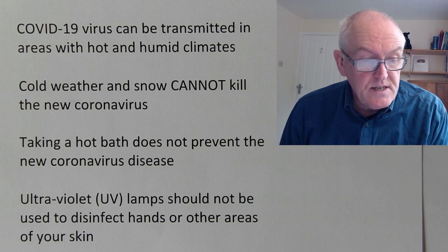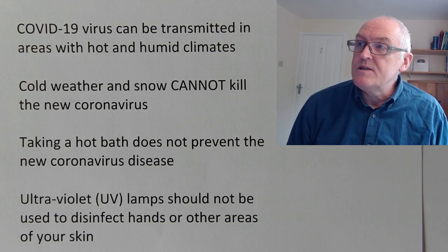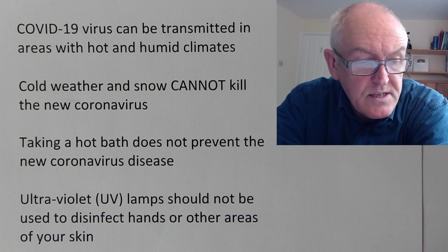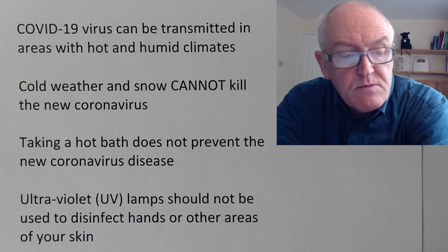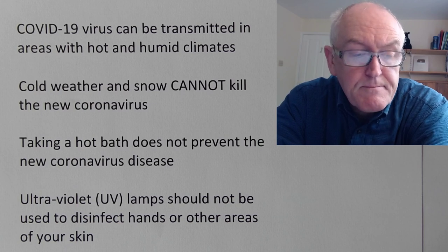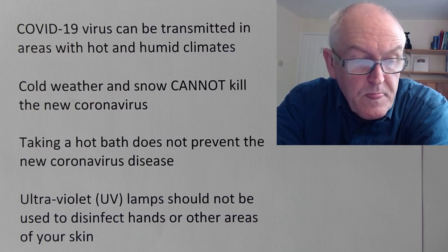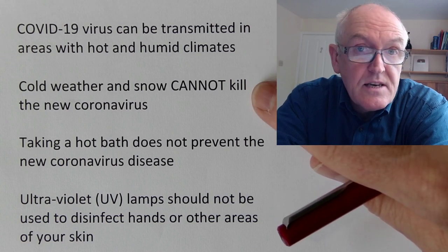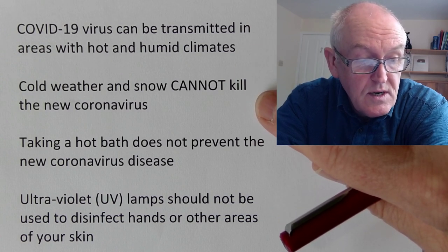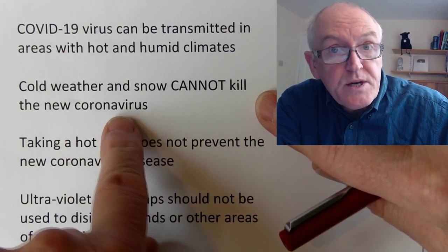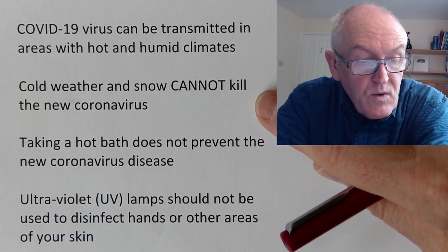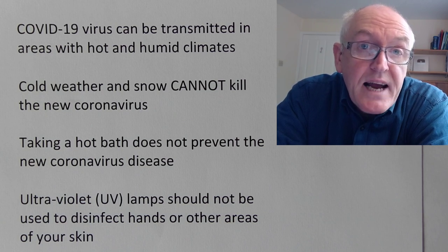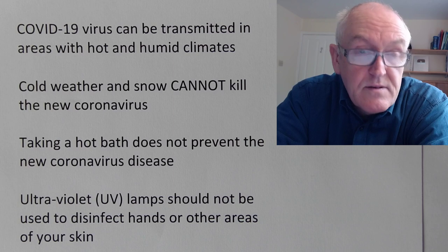The COVID-19 virus can be transmitted in areas with hot and humid climates. This was postulated in the early days — back in January we were talking about whether the disease would spread in warmer weather and whether summer would protect us. Unfortunately, the answer is no. The disease spreads in places with hot and humid climates just as it does in cold areas. Cold weather and snow cannot kill the new coronavirus — cooling the virus, even putting it in a freezer, will only preserve it. We actually know that the virus remains viable and potentially infective for longest at about five degrees centigrade.